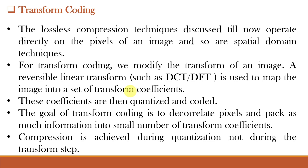These transform coefficients are then quantized and coded. The goal of transform coding is to decorrelate pixels and pack as much information as possible into a small number of transform coefficients so that compression can be achieved. Compression is achieved during quantization and not during the transform step.